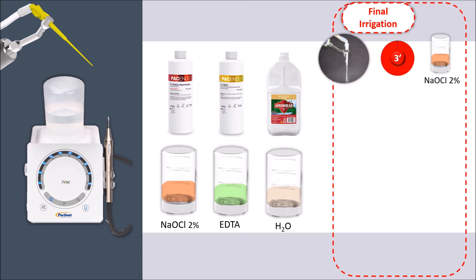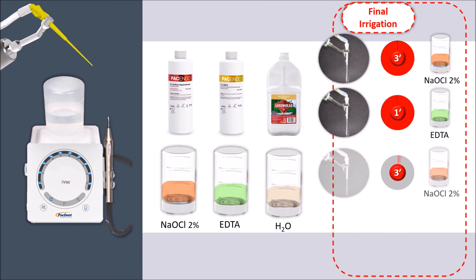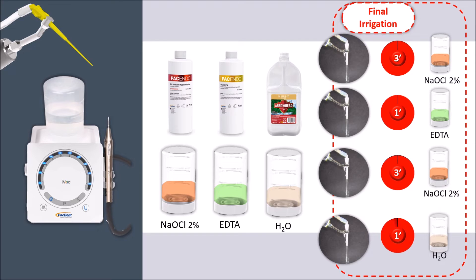Next, change the bottle to EDTA and activate and flush for one minute. Change the bottle to sodium hypochlorite and activate and flush for three minutes. Finally, change the bottle to distilled water, activate and flush for one minute.